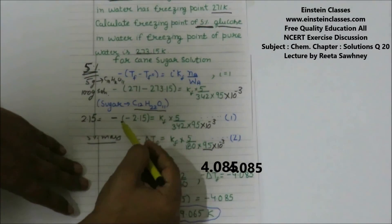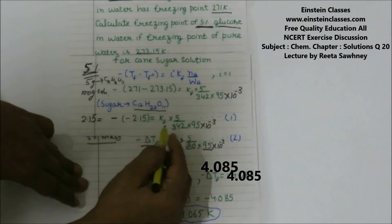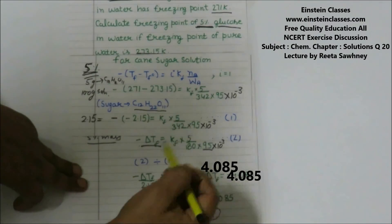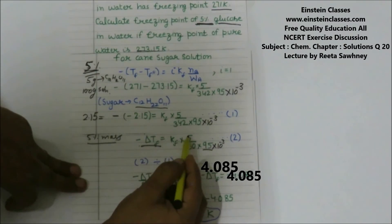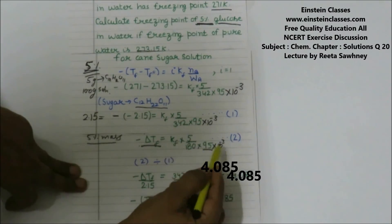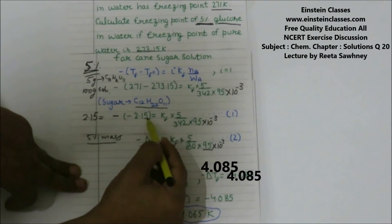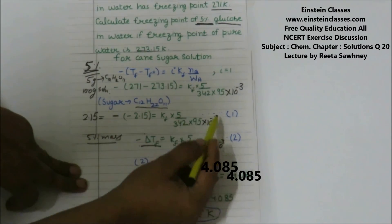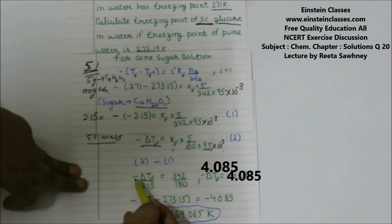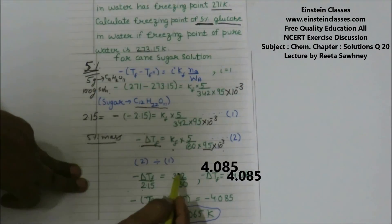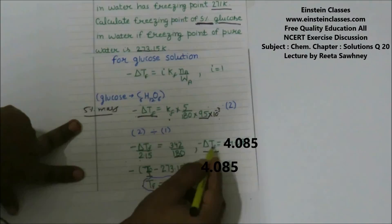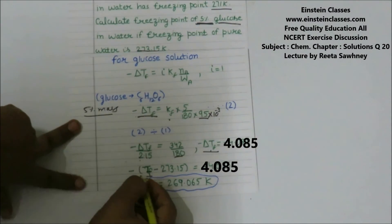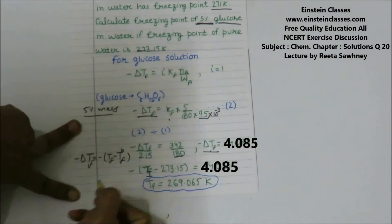The solvent mass in kg is 95×10⁻³. Our first equation is 2.15 = Kf × (5/342) / (95×10⁻³), and the second equation is minus delta Tf = Kf × (5/180) / (95×10⁻³). Dividing equation 2 by equation 1: (minus delta Tf) / 2.15 = 342/180, giving minus delta Tf = 4.085.